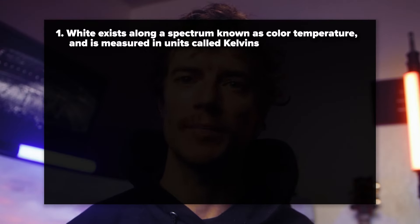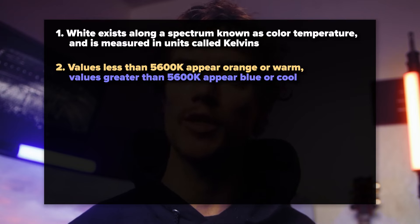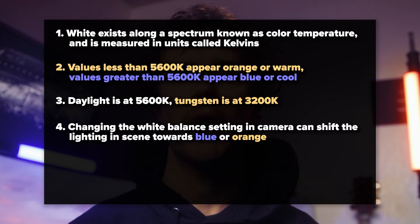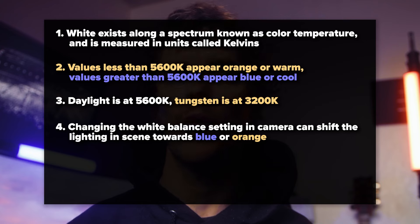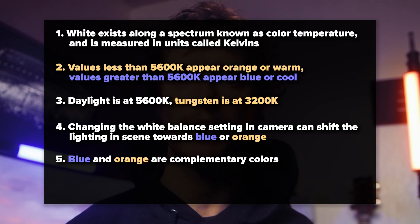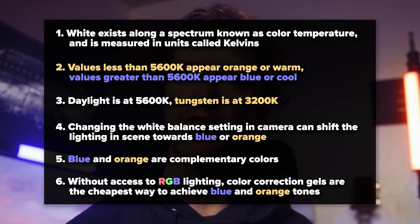Let's review some key points. The color white exists along a spectrum known as color temperature, measured in units called Kelvin. Low values appear orange or warm and higher values appear blue or cool. Daylight comes in at 5,600 Kelvin while tungsten is at 3,200 Kelvin. By manipulating the white balance setting on our camera, we can make our scene appear more blue or orange in-camera. Mixing blue and orange is pleasing to our eye because they are complementary colors — directly across from each other on the color wheel. Without RGB lighting, the best way to add blue and orange tones is by using color correction gels that come in varying strengths.